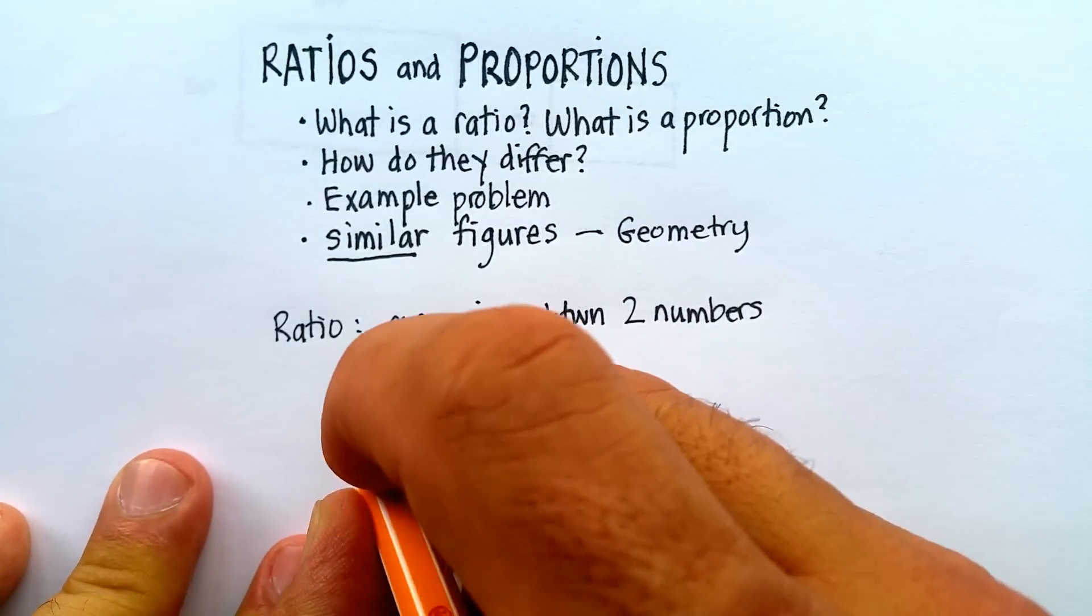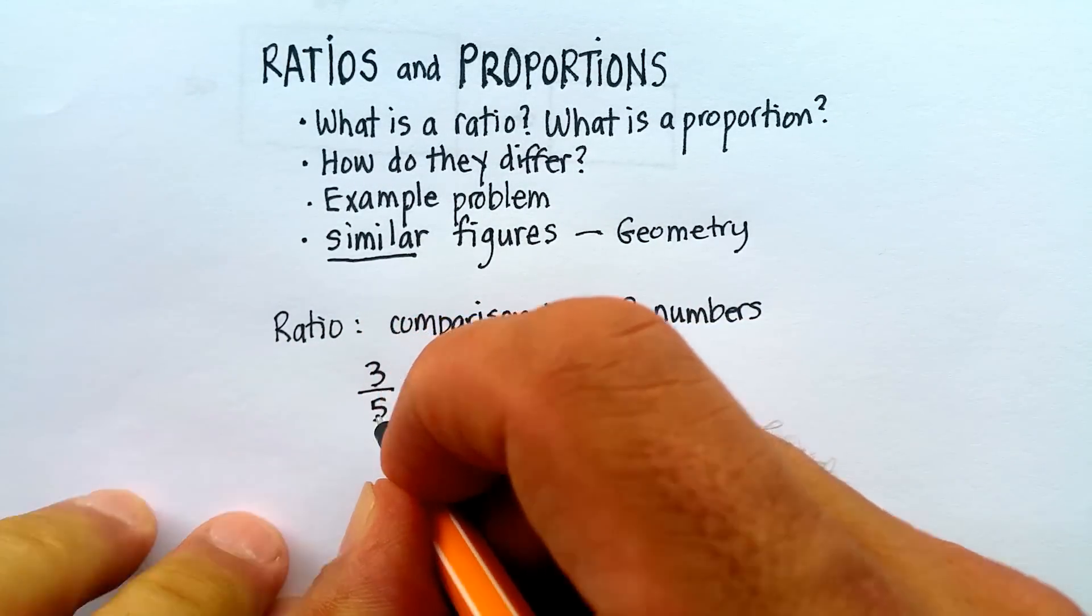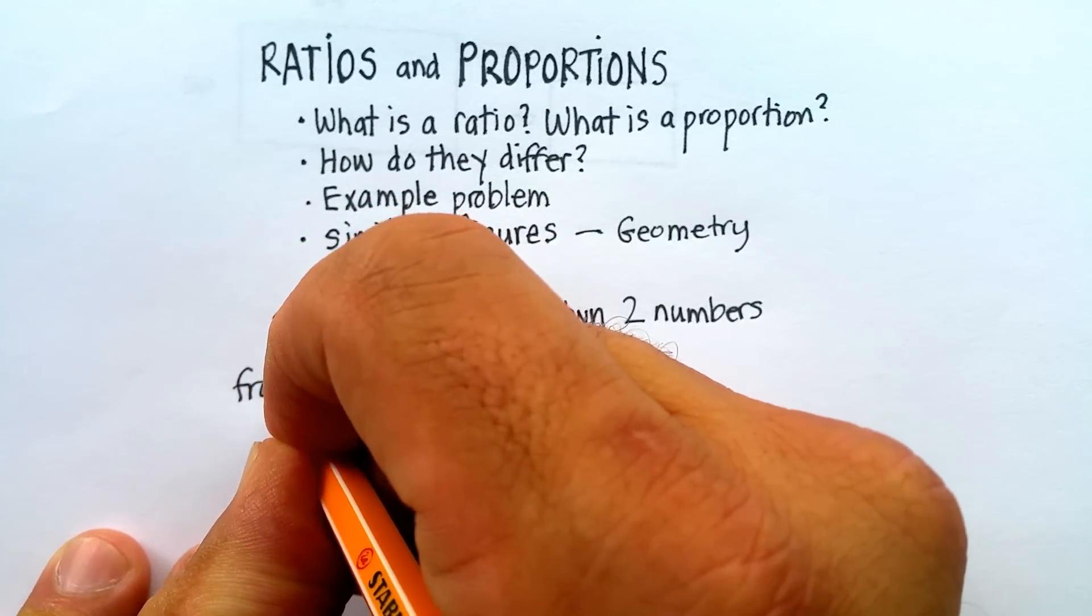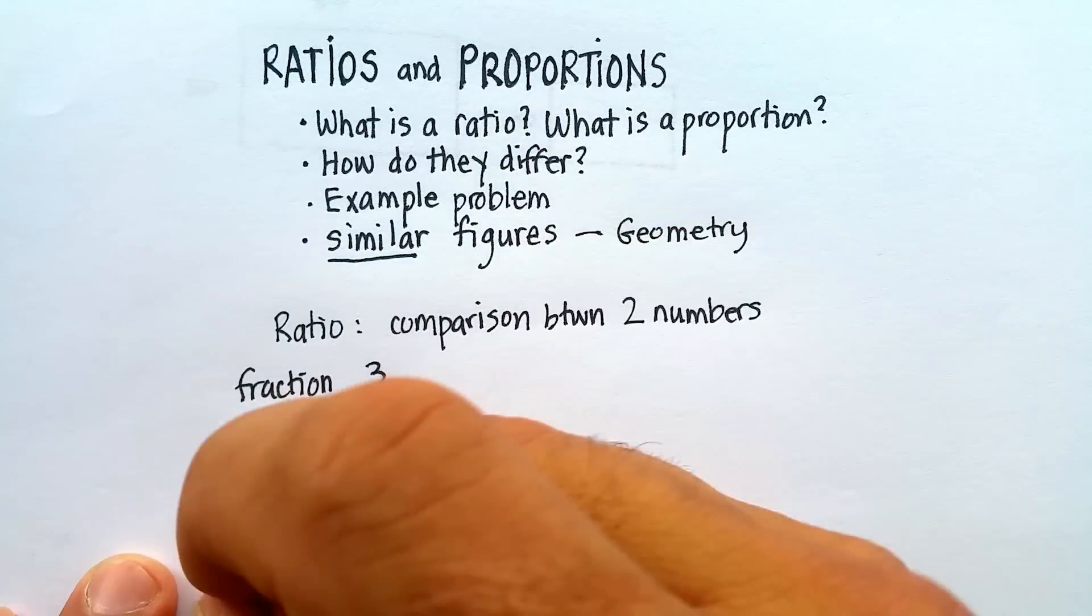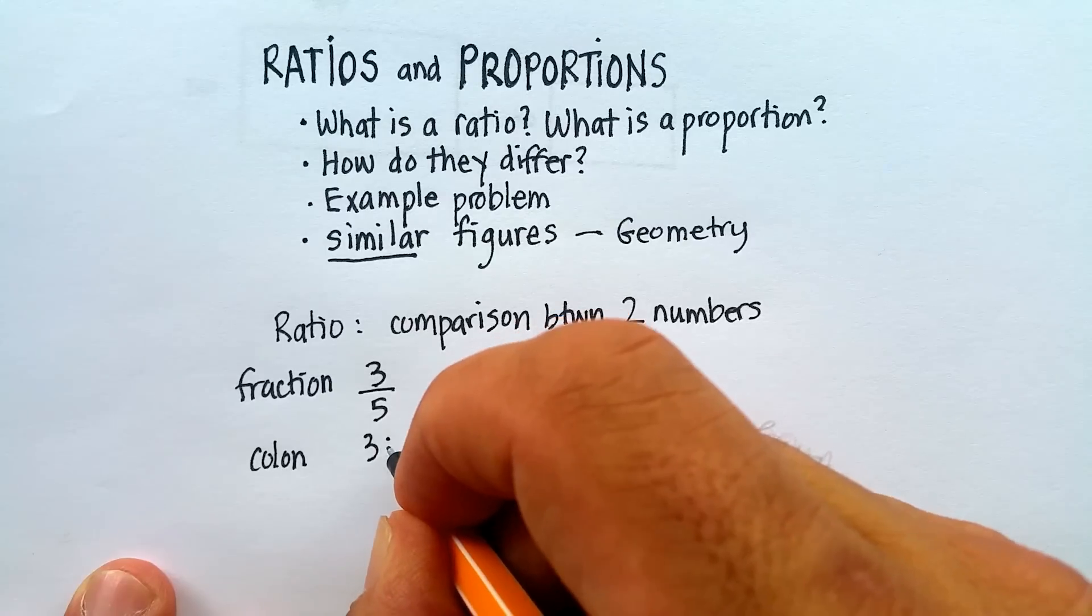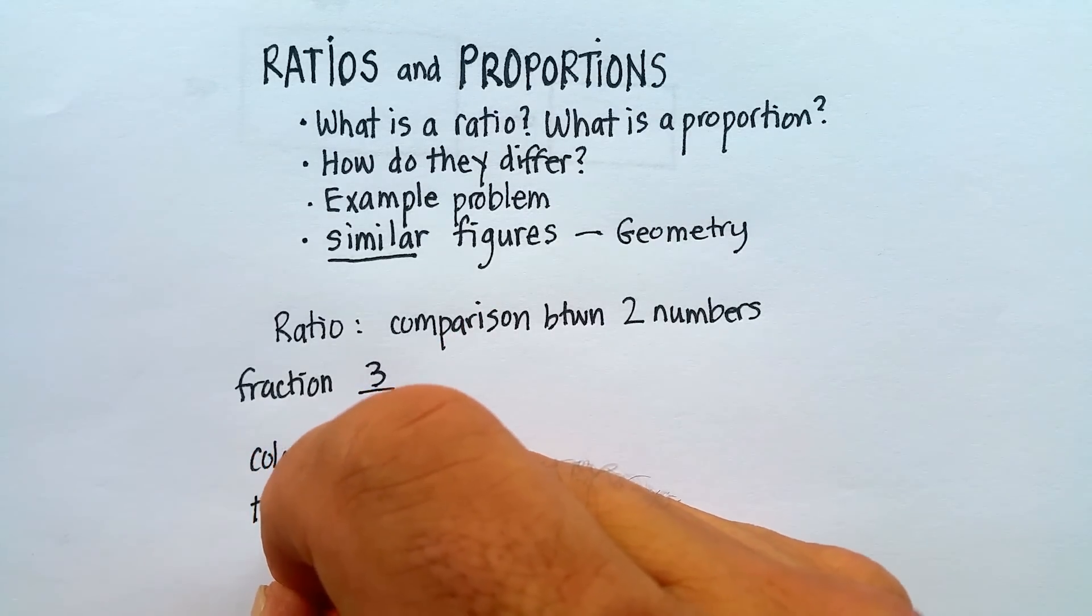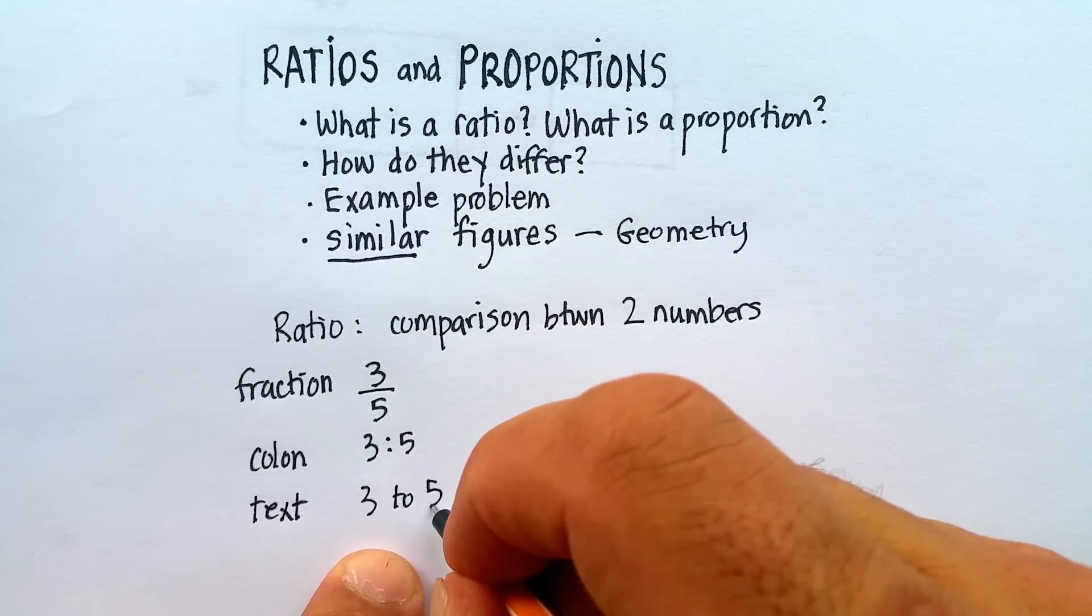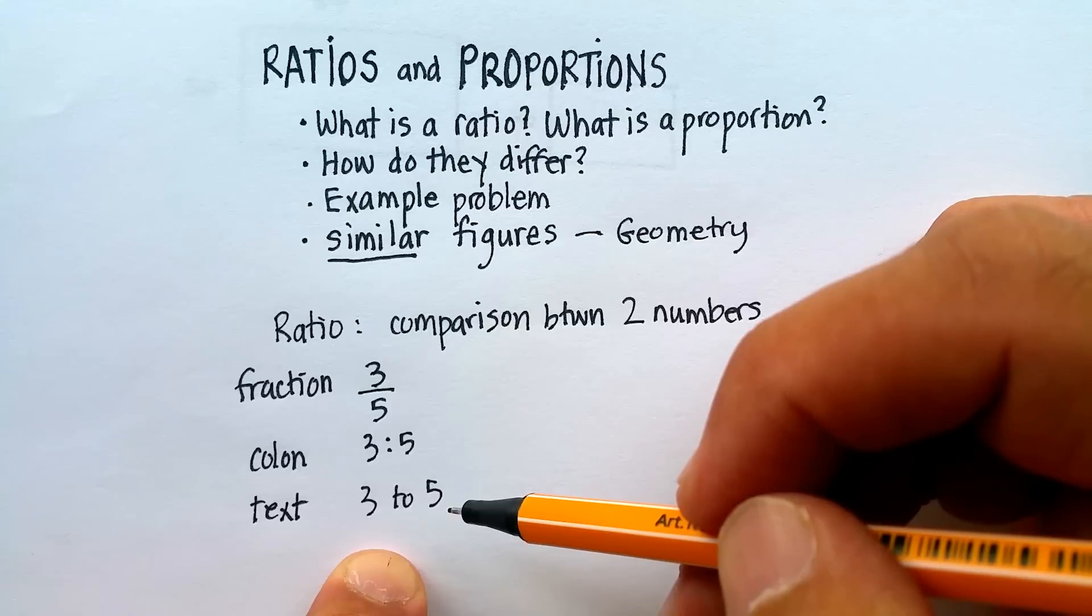How is a ratio usually written? A ratio is usually written by a fraction. So there's actually three ways to do this. You can write a ratio as a fraction, as 3 over 5. You can write a ratio using what's called a colon, which is just basically this, 3:5. Or you can use text, which is basically 3 to 5. So these are three different ways to write a ratio.